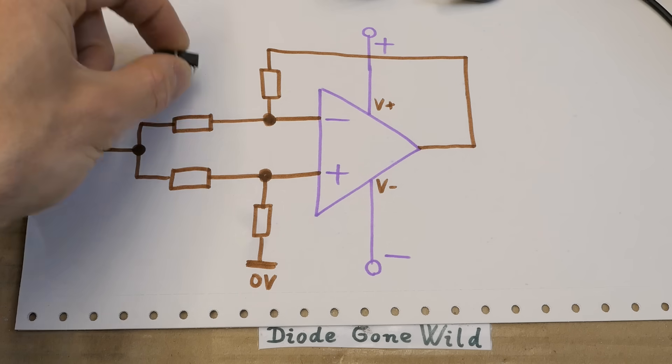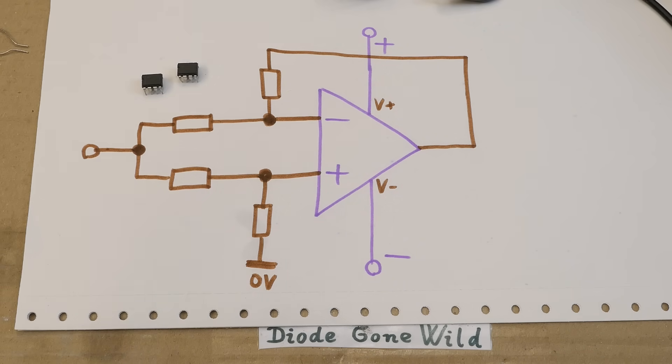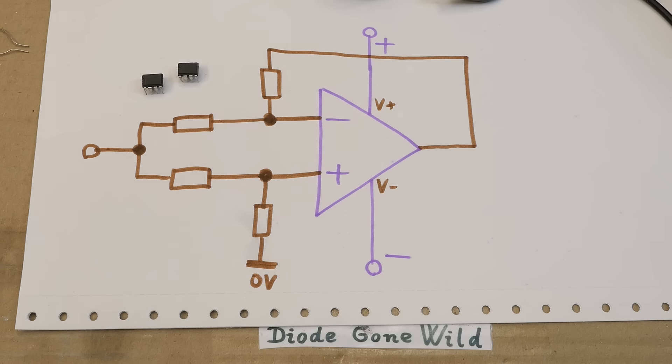And also that their common mode input voltage range does not include the negative rail, despite it should based on the datasheets. And of course at this point everybody's screaming, why don't I put them into a common mode input voltage range test circuit? So let's do it now, of course.